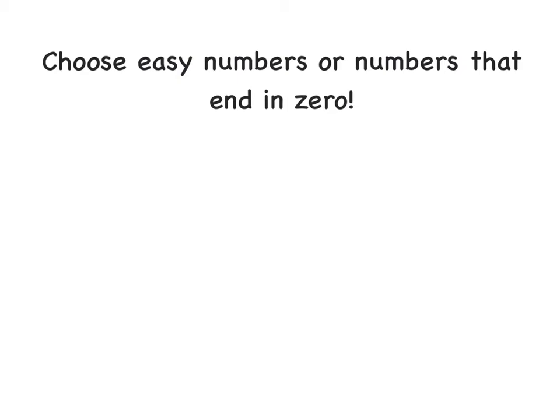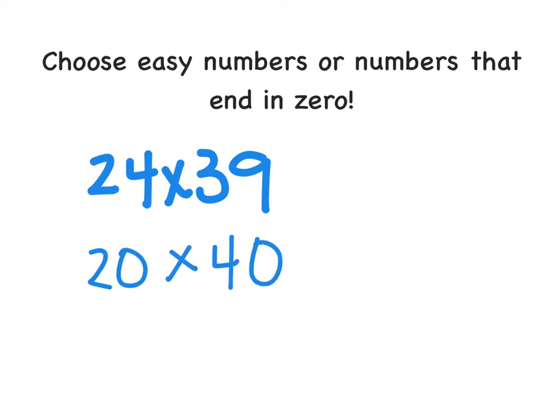Let's say we had something like 24 times 39. My advice when we're estimating with whole numbers like this is to either choose easy numbers, compatible numbers that go well together, or choose numbers that end in zero. That could be that you round each number, so 24 rounds to 20 and 39 rounds to 40. But as long as you choose something that's close, if I had changed that 24 instead to 30, that would be fine as well. You're still going to get a close estimate, which is our ultimate goal.